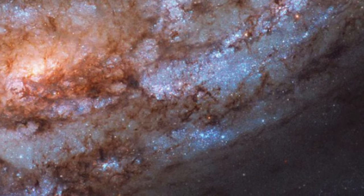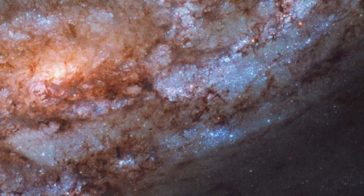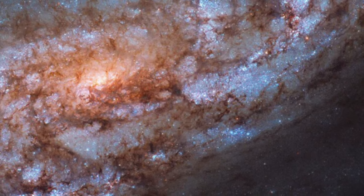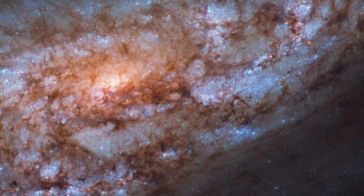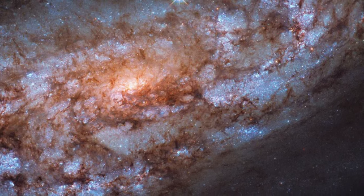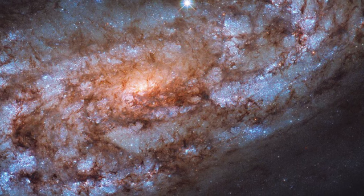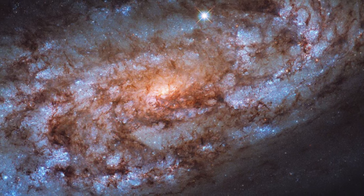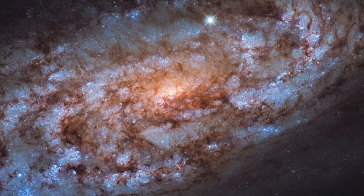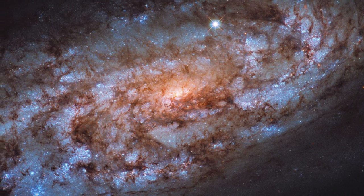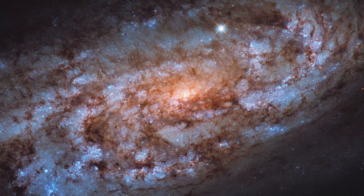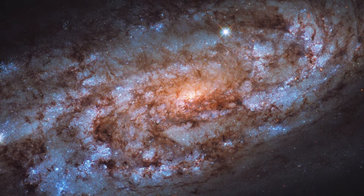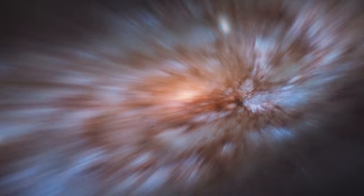So, NGC 1792 isn't just another spiral galaxy in the night sky. It's a live laboratory, demonstrating the ebbs and flows of cosmic creation and dissolution. As you look up at the heavens, ponder this. In which other galaxies might such intricate cycles of birth and death be unfolding? What untold stories are hidden in each twinkle of the night sky? In the grand tapestry of the universe, galaxies like NGC 1792 are both the artists and the art, composing cosmic symphonies that we are only just beginning to hear.